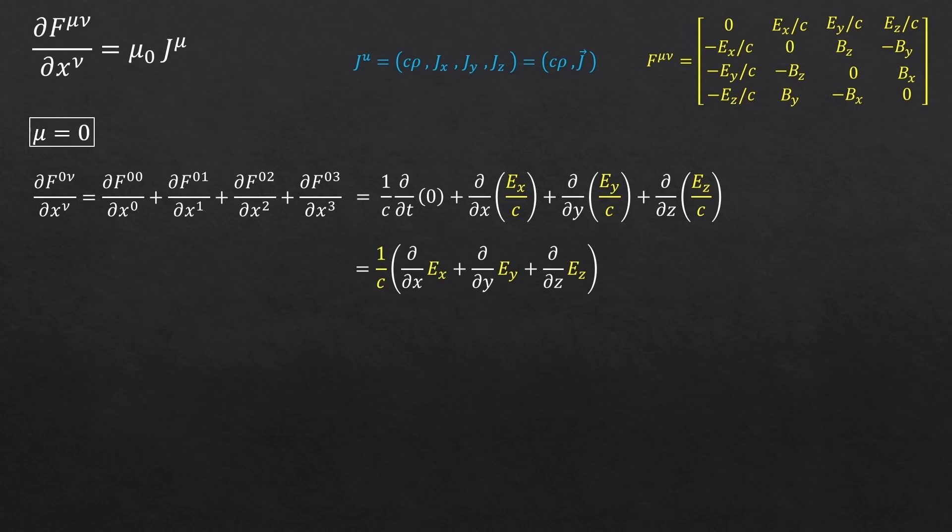Now, you see that the first term is gone, and we only got the three spatial derivatives. And what was this again? The divergence of the electric field. And we have 1 over c at the front still. So, this is the left-hand side of this equation, when mu is equal to 0.